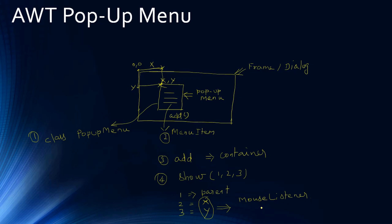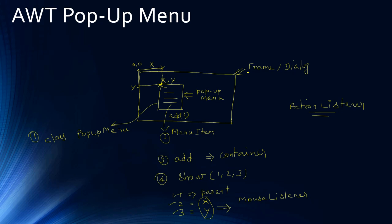In the mouse listener we will handle the click event, especially the right click. Once the user right-clicks, we get the x and y location in the container, so parameters 2 and 3 for the show method are now available via the mouse listener. The parent — a frame or dialog — can also be passed. To change the background color, for each menu item we register it with an action listener. From inside the action listener we will change the background color of the container.